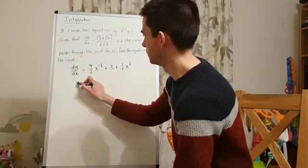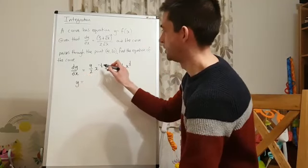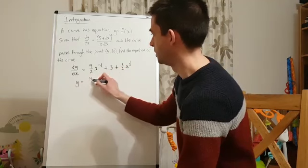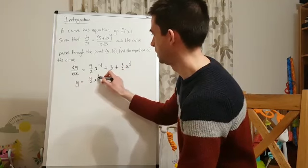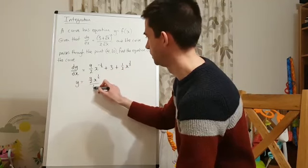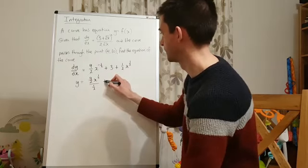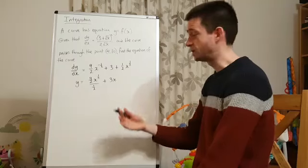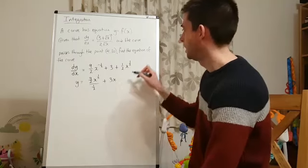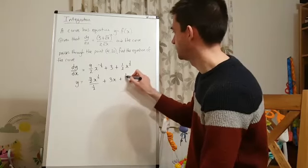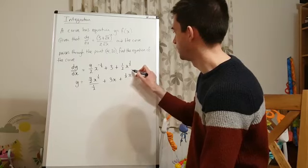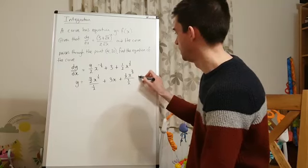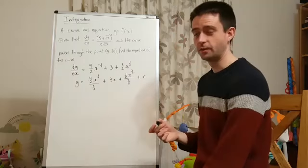Right, let's integrate it. So, y equals add 1 to the power. We're going to get a half. So, we've got 9 over 2 x to the half divided by a half plus 3x. Now, remember numbers just integrate to that number of x. And we're going to have a half x to the power of 3 over 2 divided by 3 over 2. We mustn't forget the plus c. Very, very important.